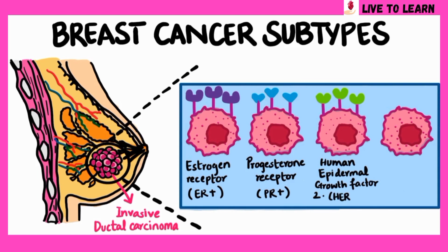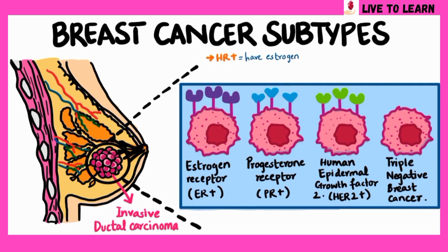About 15-20% of all breast cancers are HER2-positive. If cancer cells test negative for estrogen, progesterone, and human epidermal growth factor receptor 2, the diagnosis is referred to as triple negative breast cancer. Hormone receptor positive (HR-positive) cancer cells have both estrogen and progesterone receptors, while hormone receptor negative (HR-negative) subtypes don't have estrogen or progesterone receptors.